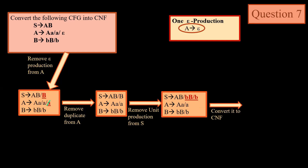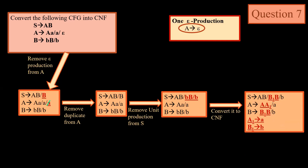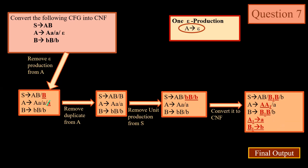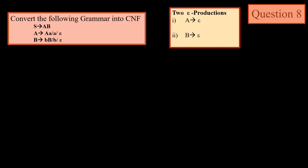When we remove the unit production, we replace capital B with the production on its right side. Now we convert this grammar into Chomsky Normal Form. We introduce two new productions: A1 → a and P1 → b. The output has two non-terminals or a single terminal corresponding to every non-terminal on the left side.